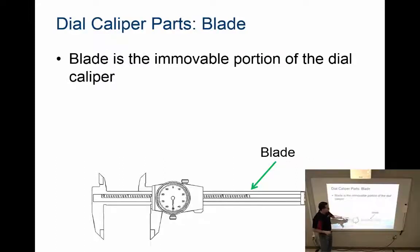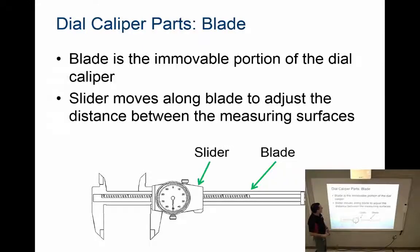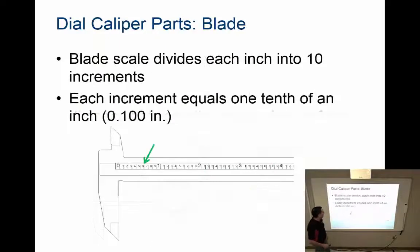Let's talk about terminology. The blade is the portion of the dial caliper that does not move. This is the stable and immovable part of the caliper. It's also where we have some of the larger increment measurements. The slide is the portion that moves along the blade. As the slide moves, you'll notice that the pointer will revolve as well.